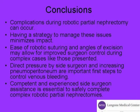In conclusion, complications during robotic partial nephrectomy can occur. Having a strategy to manage these issues helps minimize their impact. The ease of robotic suturing and angles of excision may allow for improved surgical control during complex cases. Direct pressure by the side surgeon and increasing the pneumoperitoneum are important first steps to control venous bleeding. A competent and experienced side surgeon assistant is essential to safely complete complex robotic partial nephrectomies.